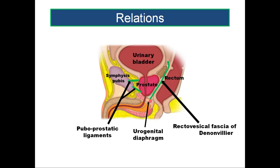At the lower end of the anterior surface, just in front of the apex of the prostate, you find the opening of the urethra. The prostatic urethra opens in the lower part of the anterior surface, just anterosuperior to the apex of the prostate. Coming to the base of the prostate, it is adjacent to the urinary bladder — specifically the neck of the urinary bladder.